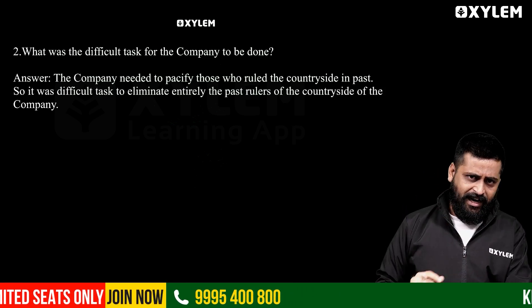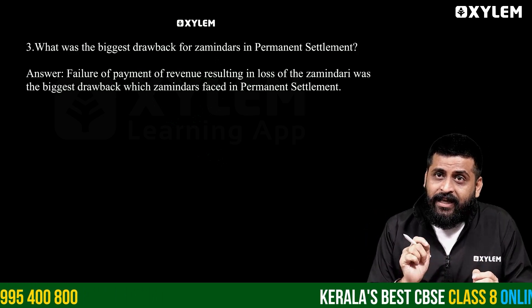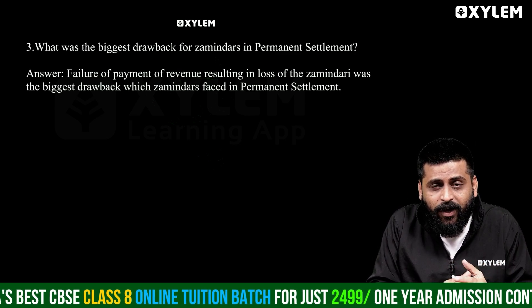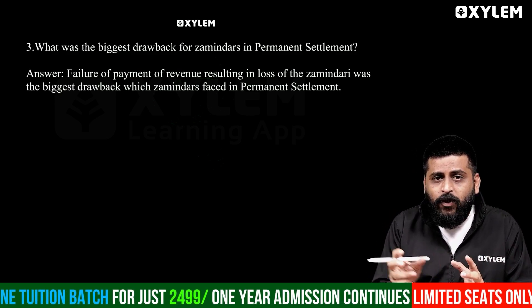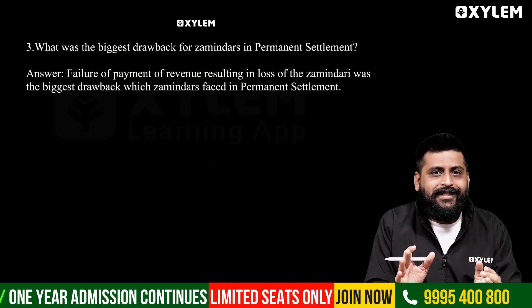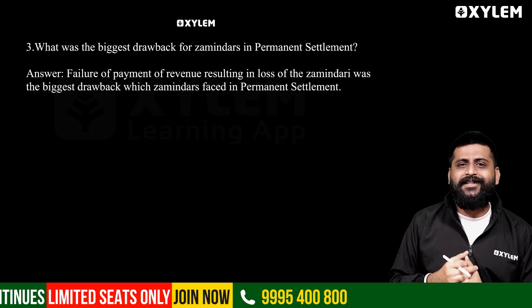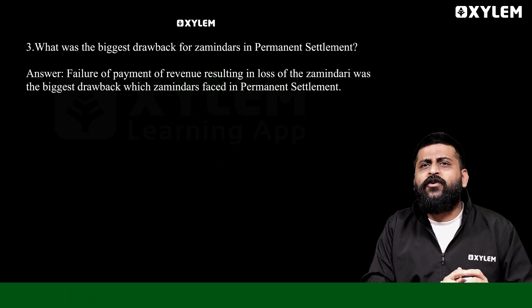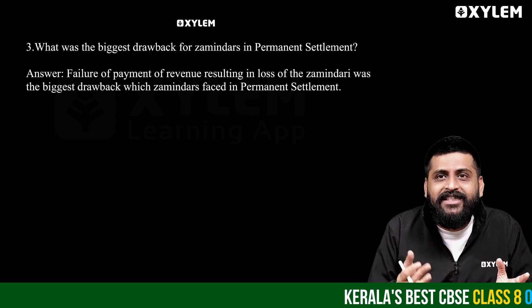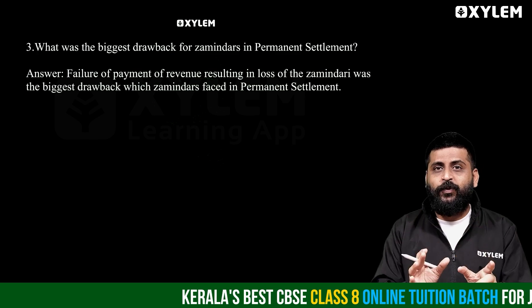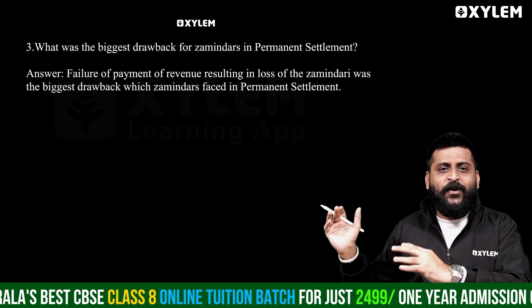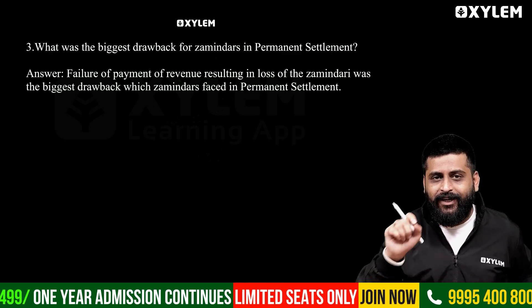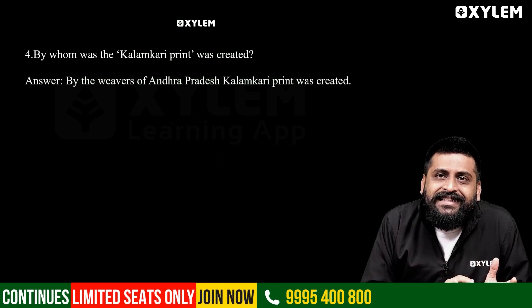The third question is: what was the biggest drawback for the zamindars in the permanent settlement? In the permanent settlement, the zamindars became landlords. A fixed amount of tax was set under the zamindari system. The failure of payment of revenue resulting in the loss of zamindari was the biggest drawback the zamindars faced in the permanent settlement.